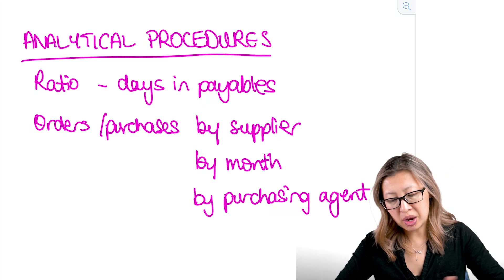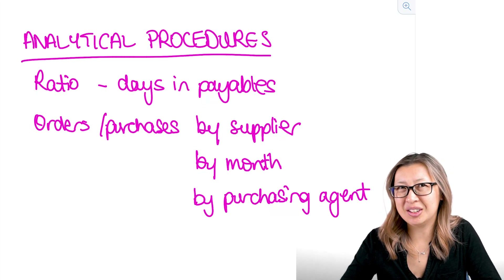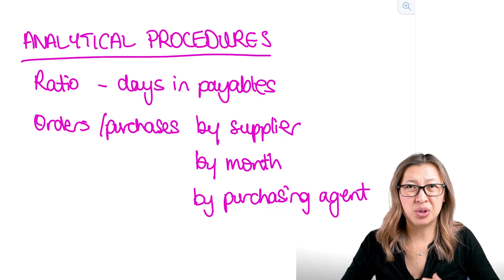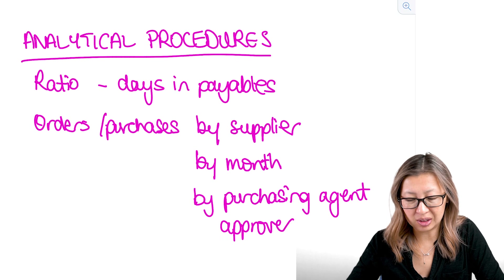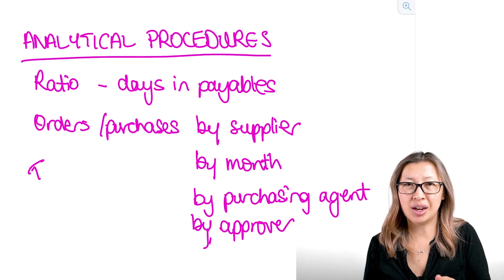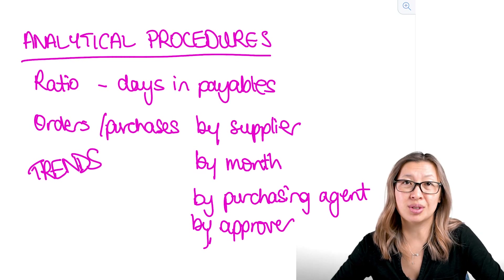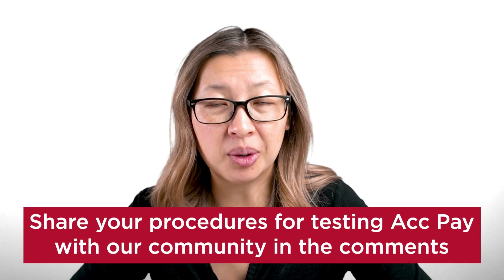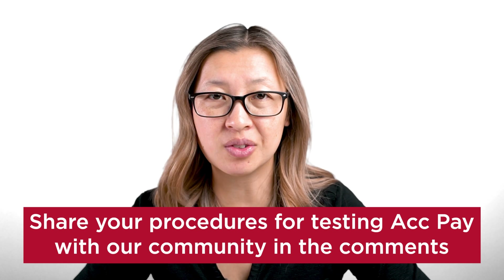One other thing I mentioned earlier is that we might want to review a list of approved suppliers — that's not really an analytical procedure, but if you thought something unusual was going on, you could even cross-reference supplier addresses with employee addresses, just in case. So those are my best examples of procedures you could use to test accounts payable — that's not a truly exhaustive list. If you have an idea, please share it with our learning community in the comments, whether you're a student or a practitioner who has tried something in your work as an auditor.